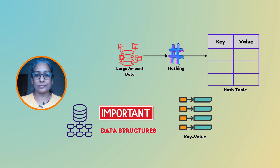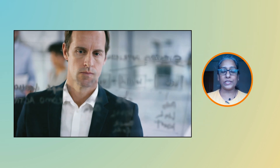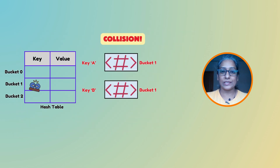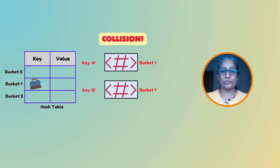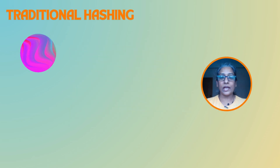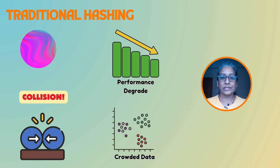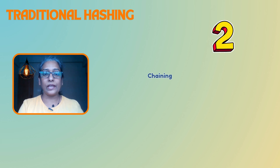However, one of the biggest challenges in traditional hashing methods is dealing with collisions — situations where two keys are mapped to the same hash value. This is where cuckoo hashing comes into play, providing a solution that promises constant time complexity for both lookup and insertion even in the worst case. Traditional hashing methods struggle with collisions, which degrade performance when things get crowded.